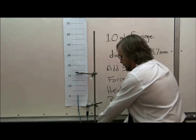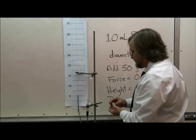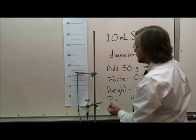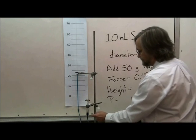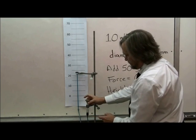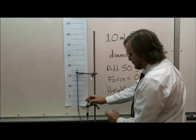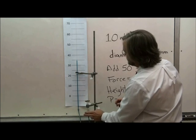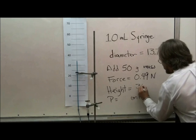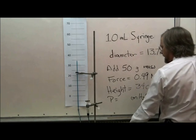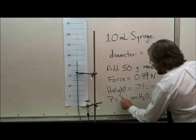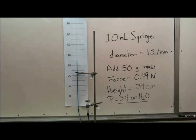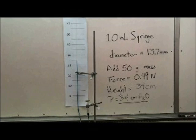Now we're ready for an experiment. If I place a 50 gram mass on the plunger of the syringe, gravity will cause this 50 gram mass to exert a force of 0.49 newtons on the syringe. This force is spread out over the surface area of the plunger and results in a pressure developing inside the syringe, causing the water in the barometer to rise. It's necessary to jiggle the syringe a little bit because of friction between the plunger and the barrel of the syringe. When the system reaches equilibrium, the water in the barometer has risen by 34 centimeters.